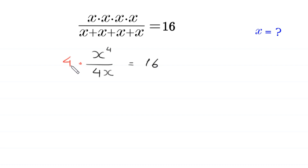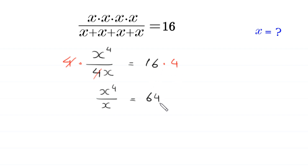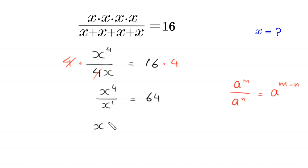Now we multiply both sides of this equation by 4, so this 4 gets cancelled with this 4, and on the left side we are left with x to the power 4 divided by x, equal to 16 times 4, which is 64. By using the power rule — a to the power m divided by a to the power n equals a to the power m minus n — this x to the power 4 over x to the power 1 becomes x to the power 4 minus 1, which is x cubed, equal to 64.